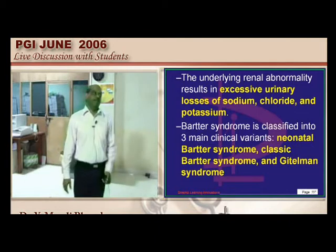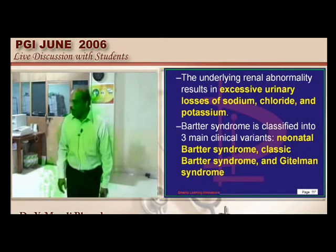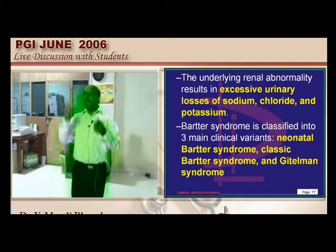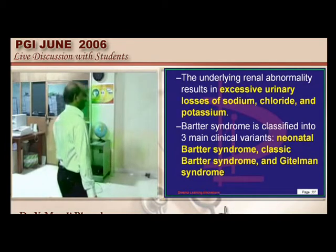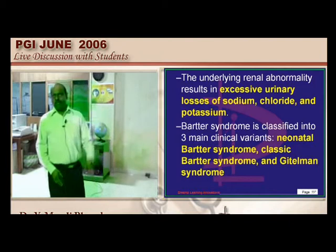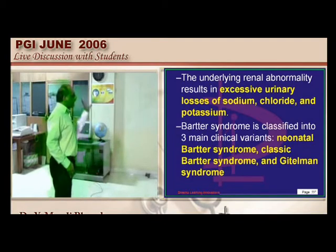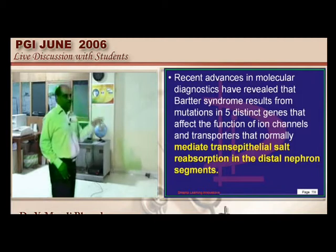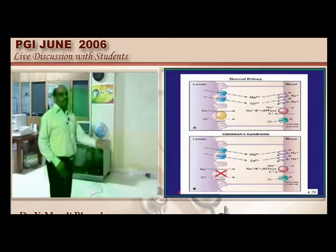In Bartter, patients lose sodium and chloride into urine continuously, which should cause hypotension, but aldosterone compensates. They have normal BP because both effects balance out. There are five distinct gene mutations affecting ion channels and transporters that mediate transepithelial salt reabsorption at the distal renal tubule — that is where the primary problem lies.